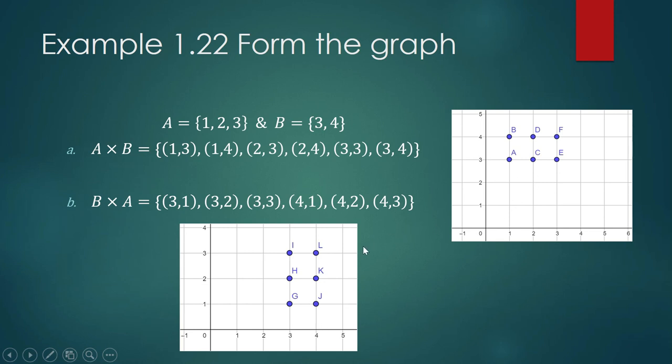Evidently, they are not the same. They are not identical, which goes to show that Cartesian product is not commutative. A cross B is not necessarily equal to B cross A.